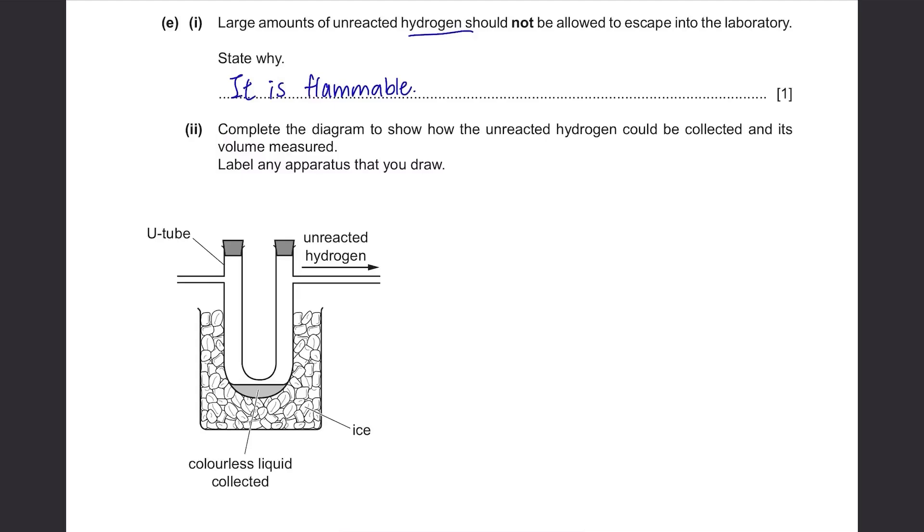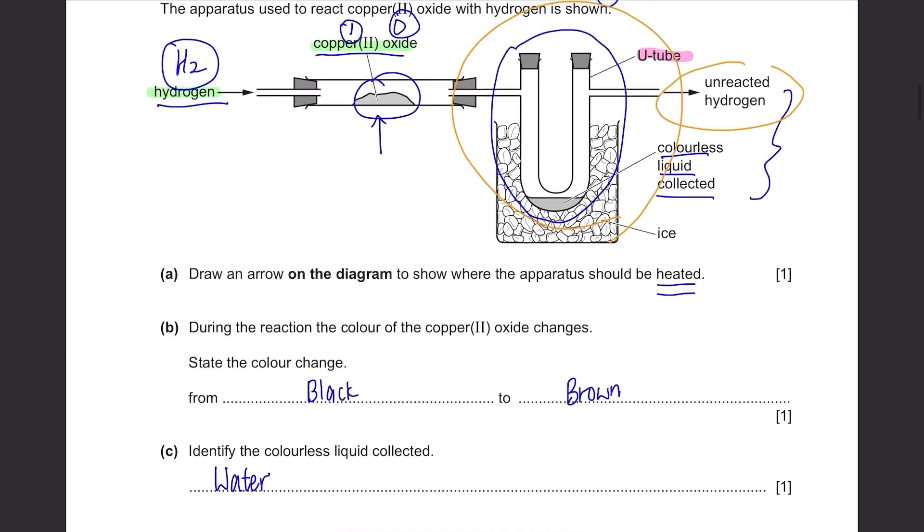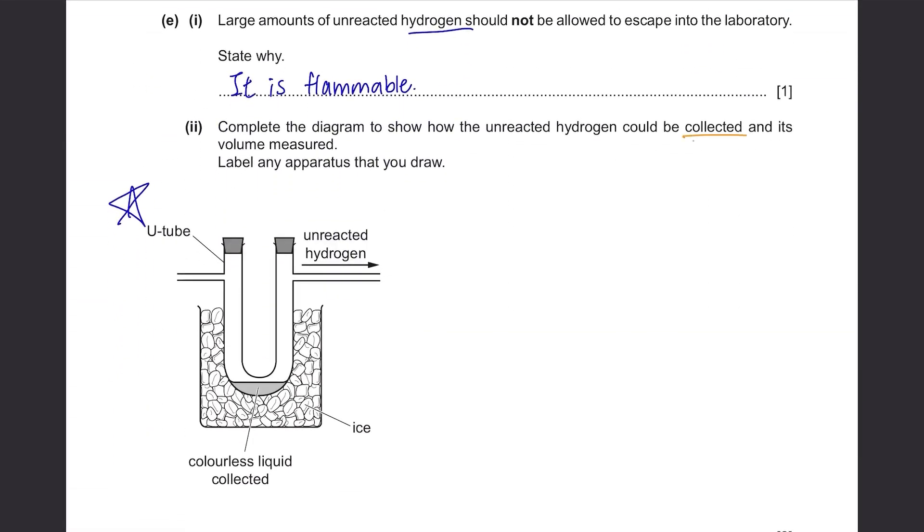Complete the diagram to show how the unreacted hydrogen could be collected and its volume measured. Label any apparatus that you draw. So this whole thing is actually taken from this section of the diagram and unreacted hydrogen will go in that way. We're supposed to draw an apparatus so that it can be collected and its volume measured. One way is to draw a gas jar. And since it needs to be measured, you can replace the gas jar with a measuring cylinder. But this isn't the most accurate way of measuring the volume. The most accurate way is to use a syringe. This is how it looks like. Make sure you draw these lines to show that the volume can be measured using these readings.